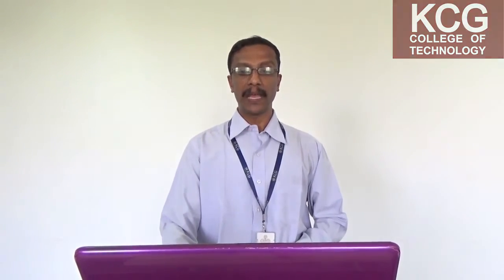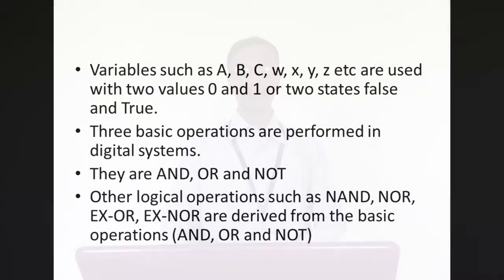The variables which are used in this digital logic are A, B, C, W, X, Y, Z, etc. These variables can assign two values, 0s and 1s, or these two values are also called two states which are false and true. 0 corresponds to false and 1 corresponds to true.